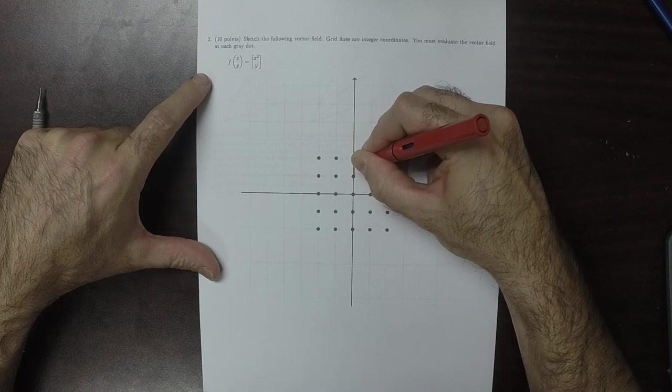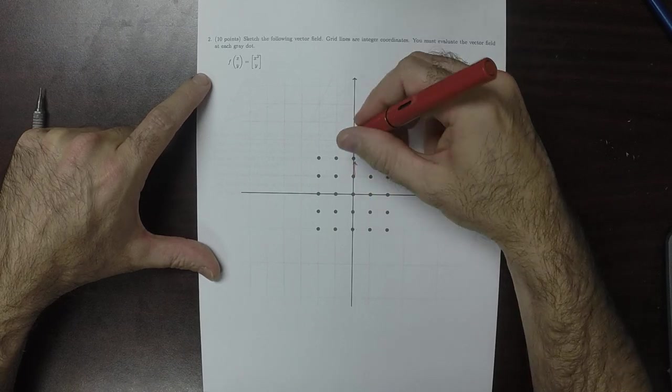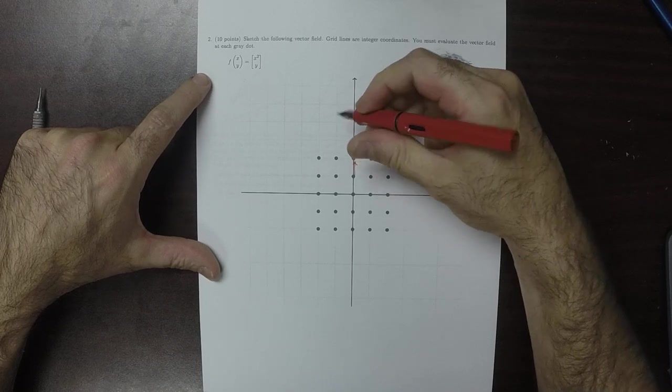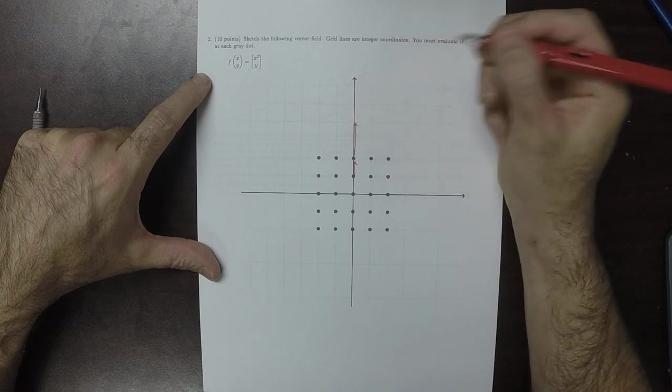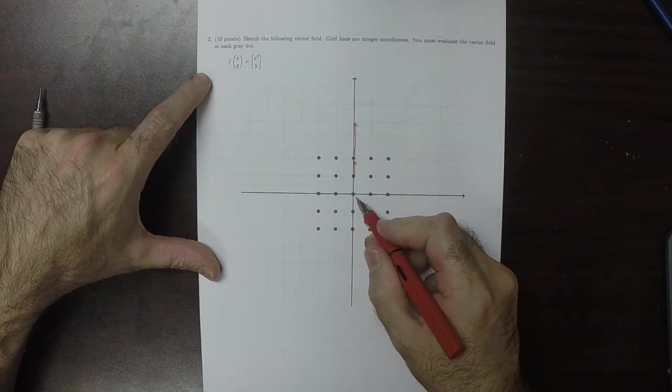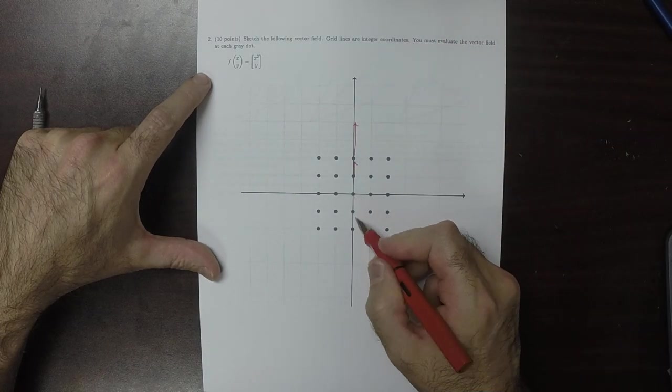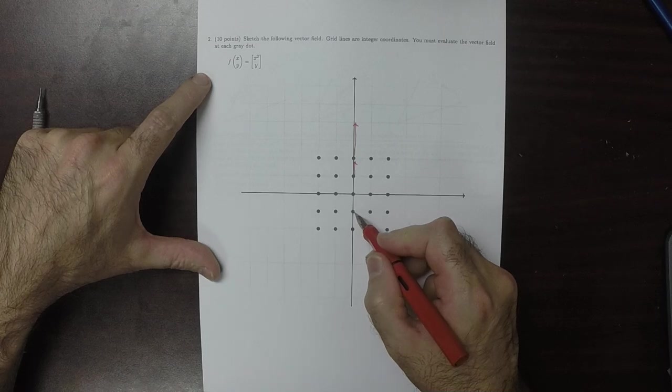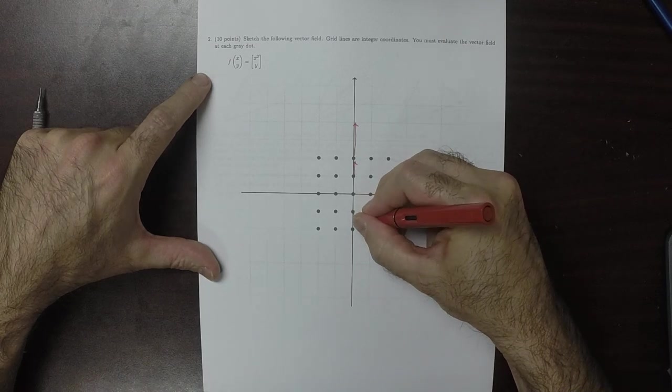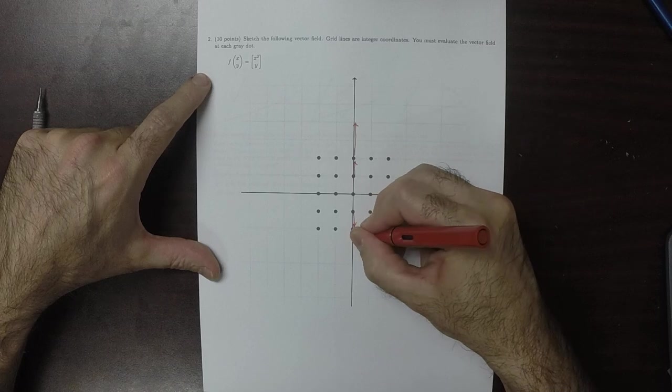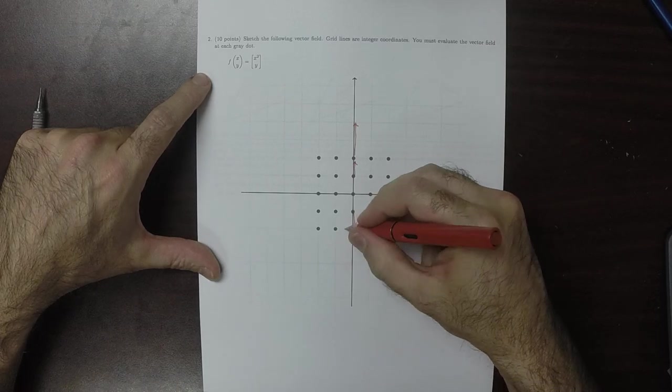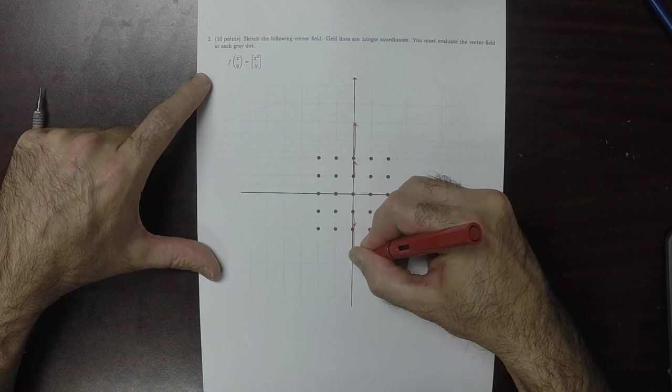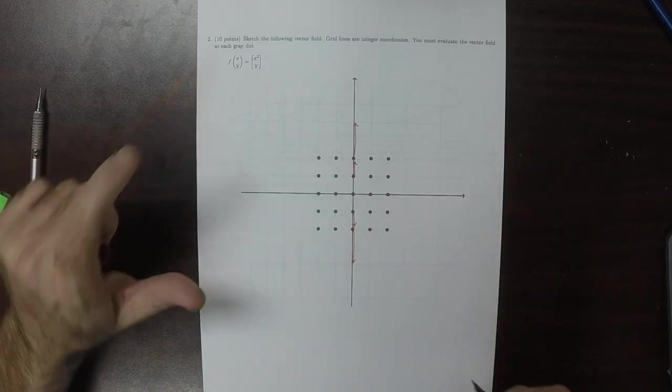So this one is fixed—this is x is zero and y is one, so that goes here. This one is x is zero and y is two, so this one like that. That one is fixed. X is zero and y is negative 1, so this one goes that way. And x is zero and y is... okay, so that looks good.